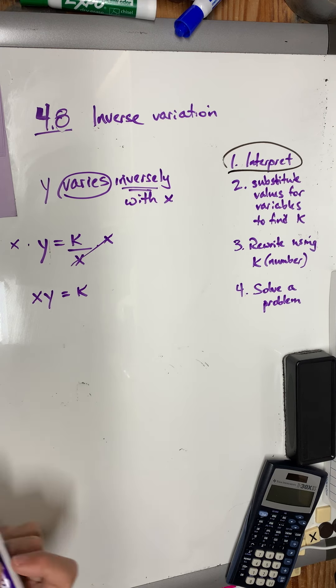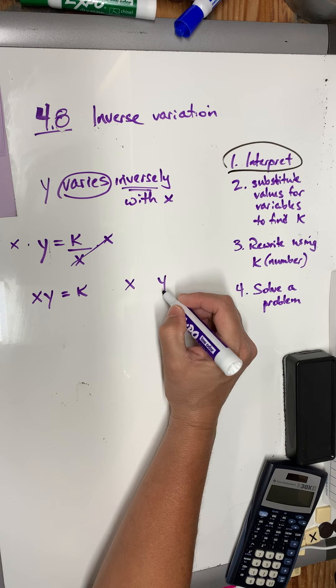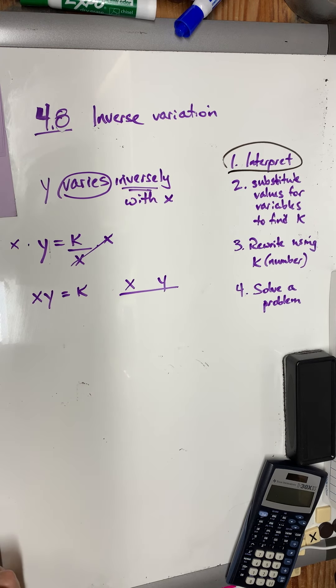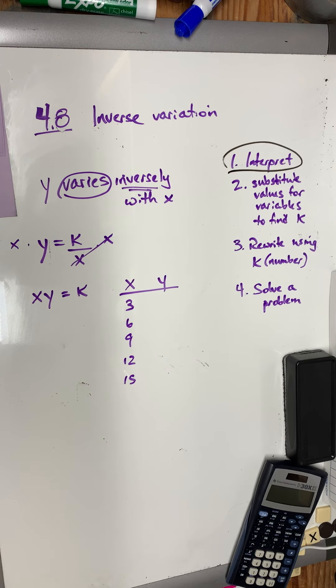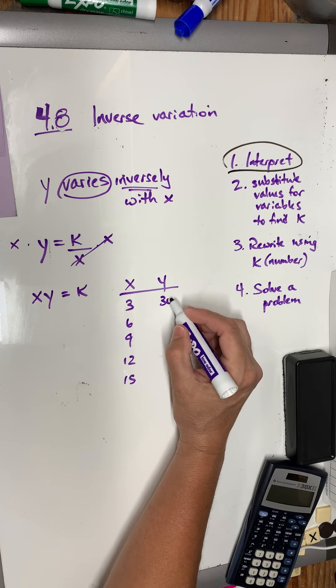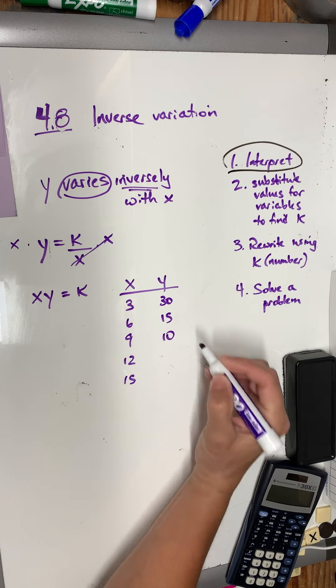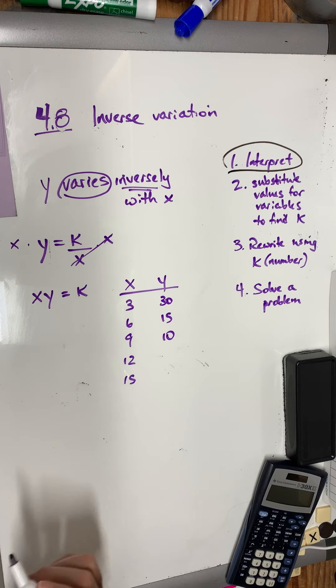So, if you look at question 1, they give you several x values and y values. So, my x and y, I've got 3, 6, 9, 12, 15 for x. And for y, I have 30, 15, 10, 15 halves, and 6.